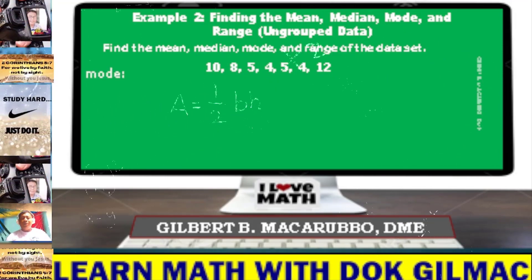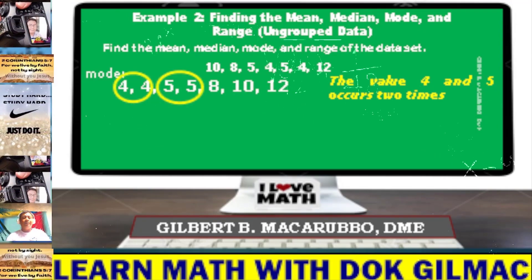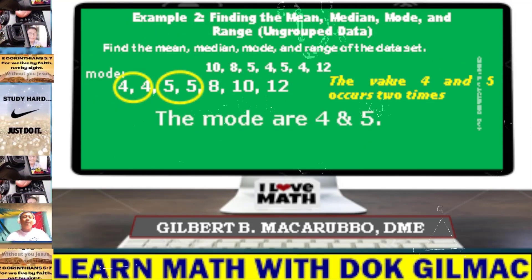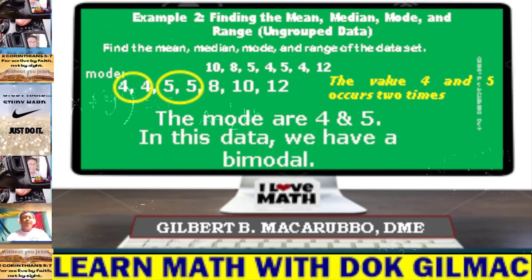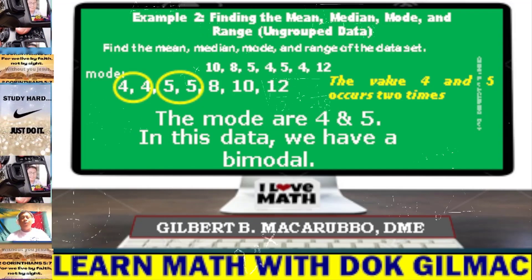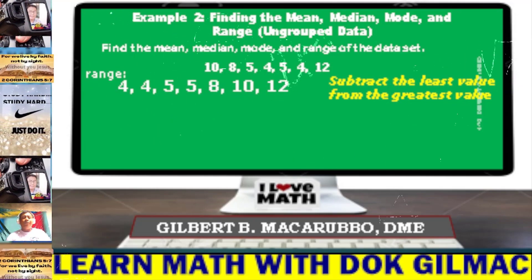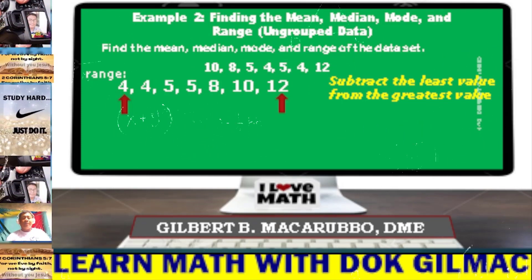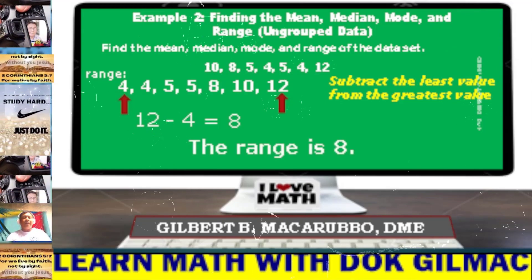This time we determine the mode. The values 4 and 5 each occur 2 times. Therefore, the mode is 4 and 5. In this data, we have a bimodal since there are 2 modes. Let's determine the range. As you can see, 4 is the least number and 12 is the greatest number. 12 minus 4 is simply equal to 8. Therefore, the range is 8.